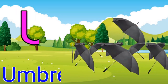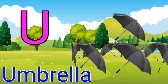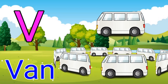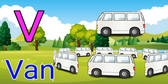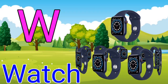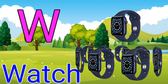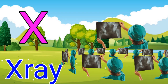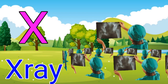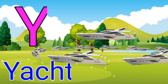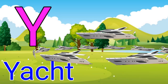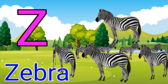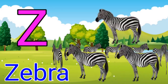U for umbrella. V for violin. W for watch. X for x-ray. Y for yak. Z for zebra.